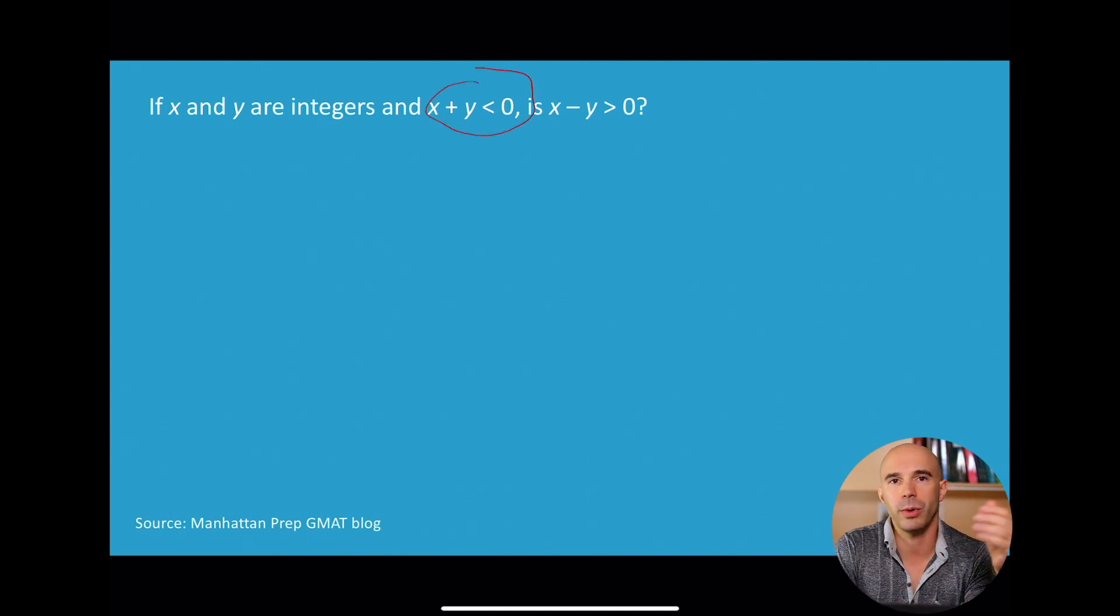X plus Y is negative means that either X and Y are both negative, or one's negative and the other is positive such that the negative one is farther away from 0 than the positive one is. Those are the options. They're either both negative or one's positive, the other is negative such that the negative one is farther away from 0 than the positive one. You're right JD, I should have said it also could be 0 and the other one is negative.